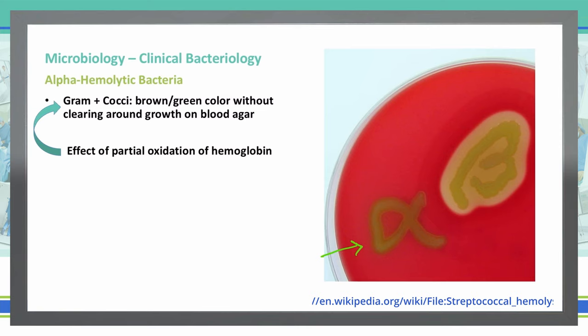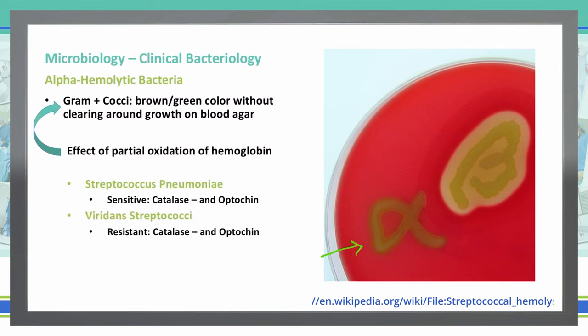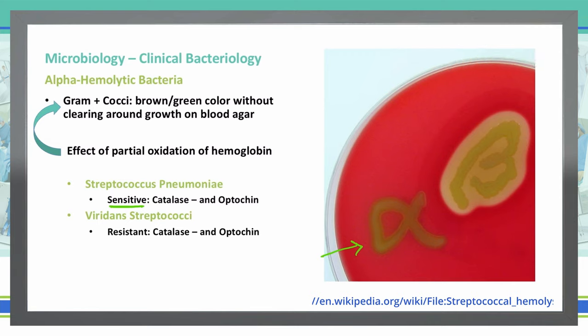This alpha hemolytic pattern indicates we're dealing with either Streptococcus pneumoniae or Strep viridans. To determine which one, we can use our previous tests. Streptococcus pneumoniae is catalase negative and optochin sensitive. Strep viridans is also catalase negative, but it is resistant to the optochin test.